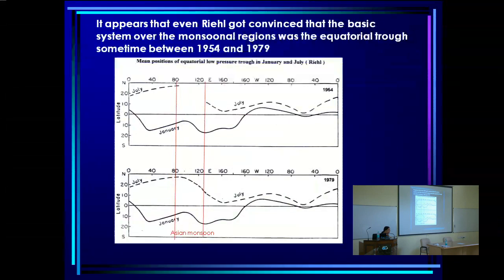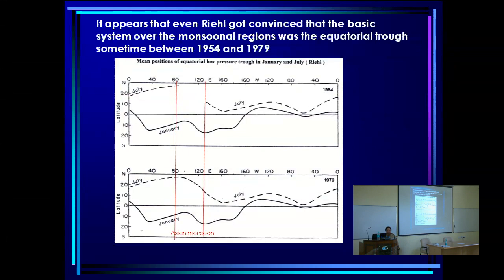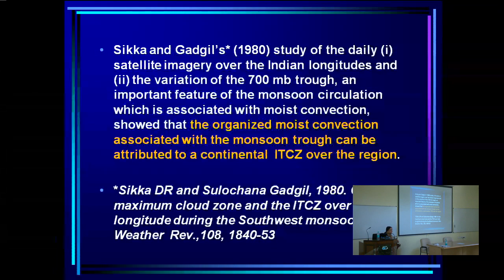Even Riehl — one of the deepest thinkers in tropical meteorology — changed his mind in the 1970s. In his 1954 book on tropical meteorology, he showed the equatorial trough as continuous over India in January, but absent in summer. By 1979, in his book on climate in the tropics, he decided that the equatorial trough does come over in winter but not in summer. This shows the interesting evolution of thought.